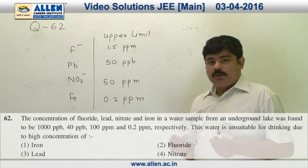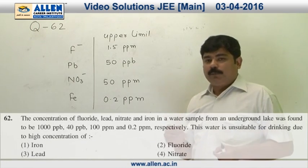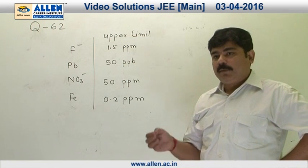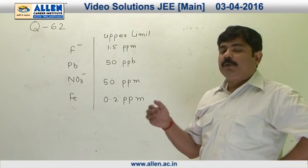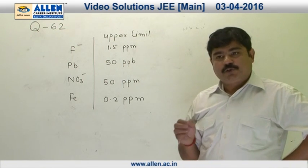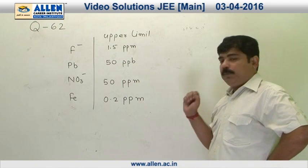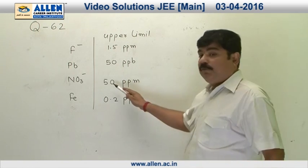Water is unsuitable for drinking when physicochemical parameters exceed their upper limits. In question 62, the concentration of nitrate is given as 100 ppm, but the upper limit is 50 ppm.